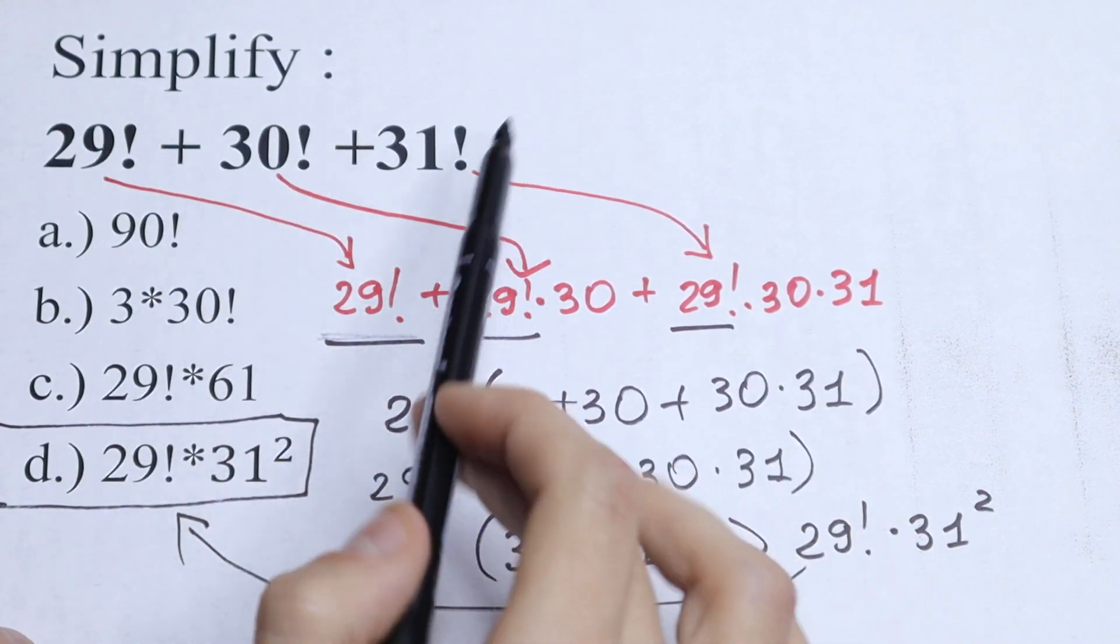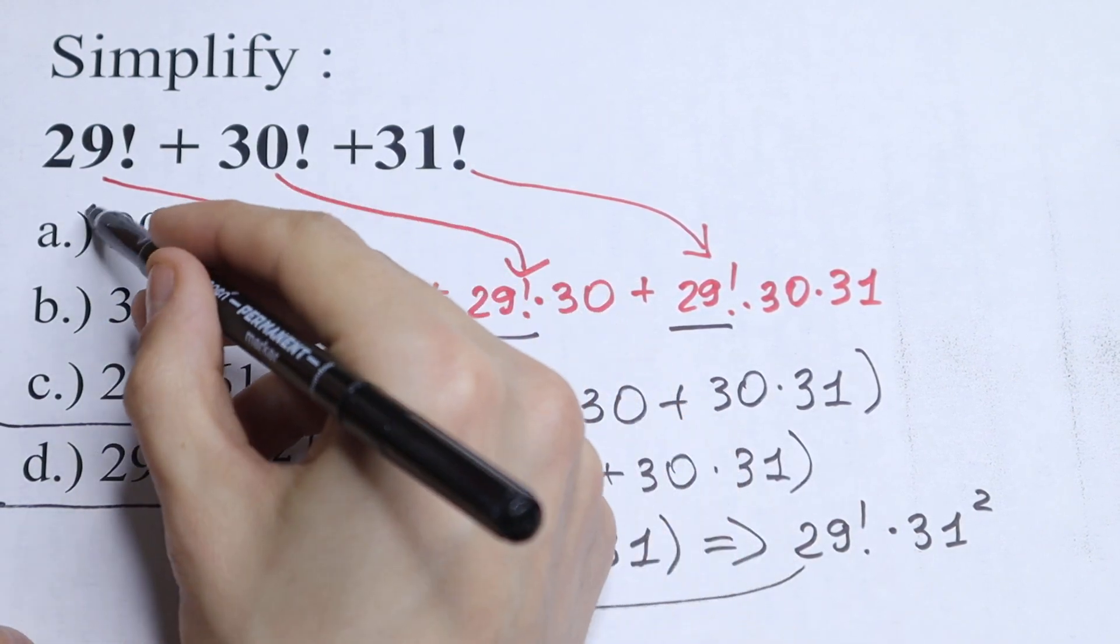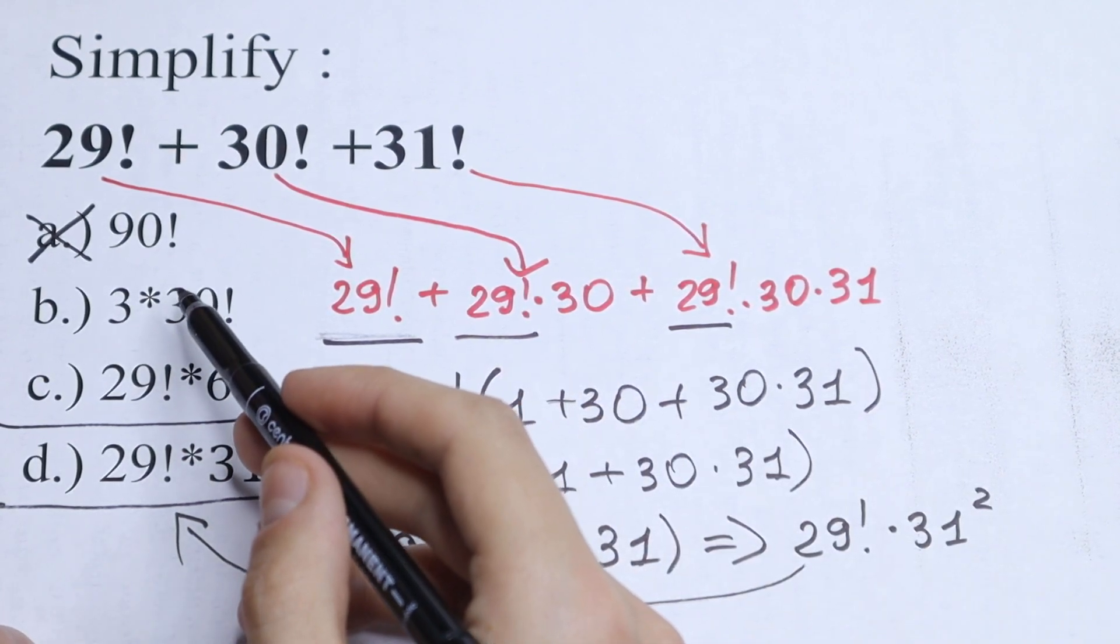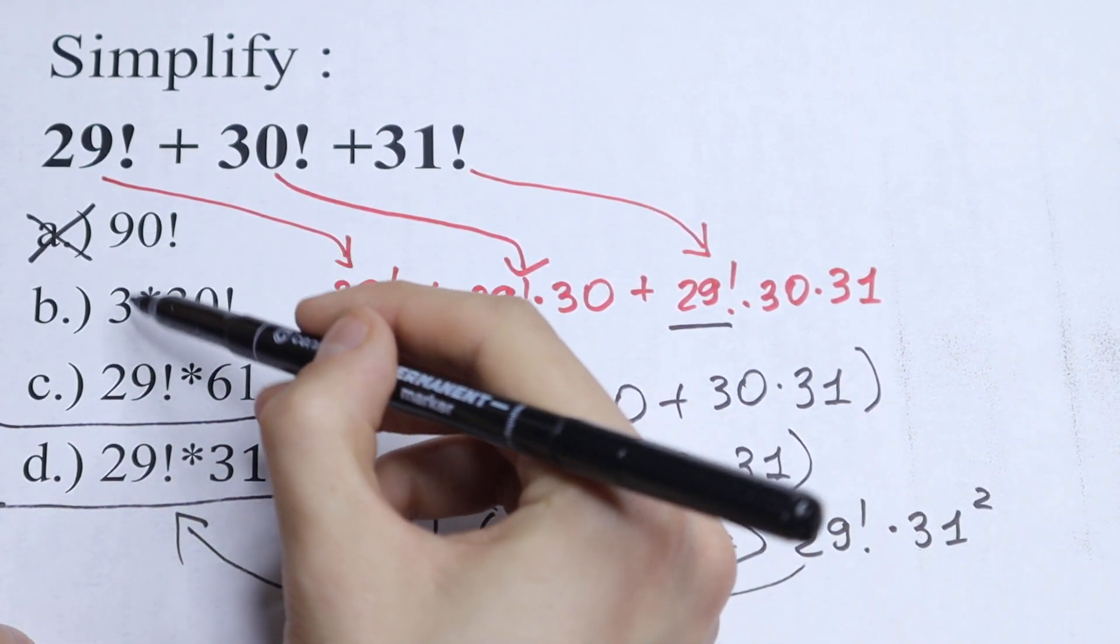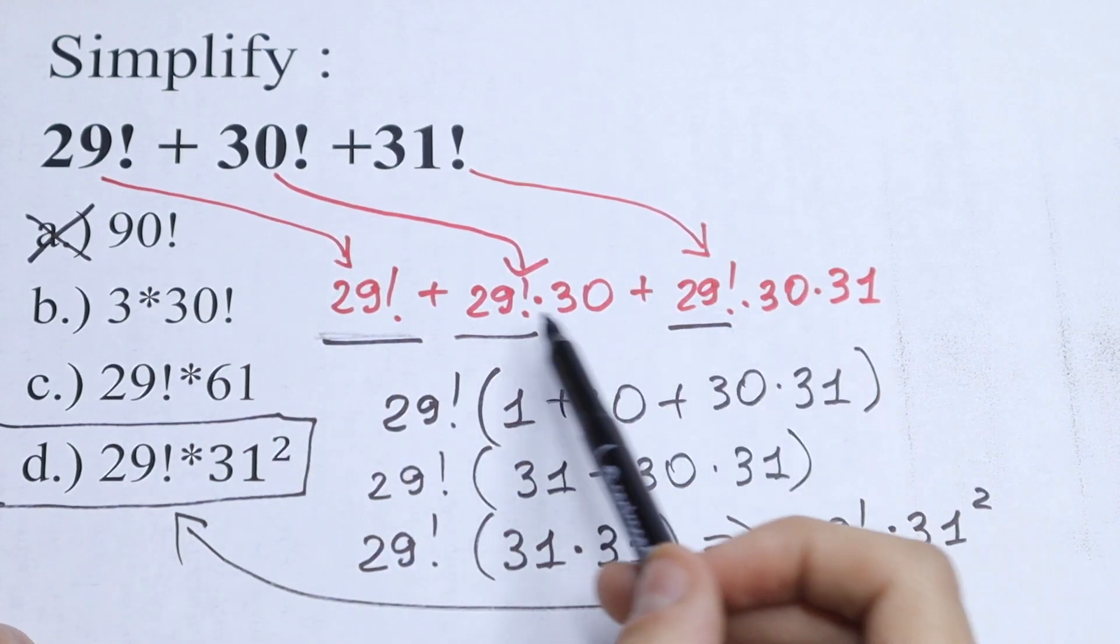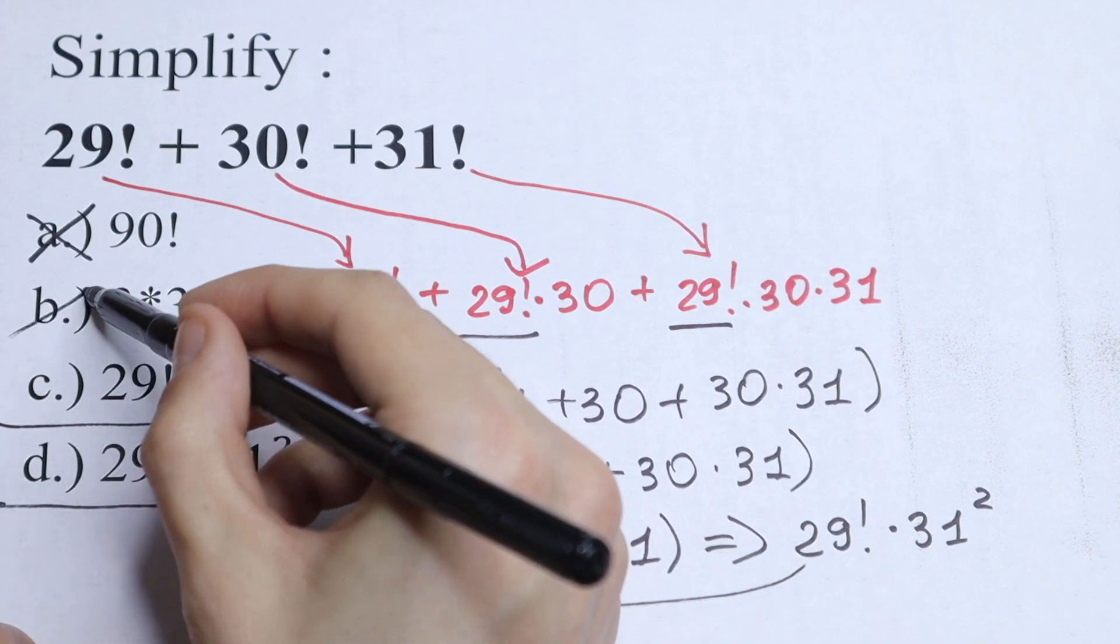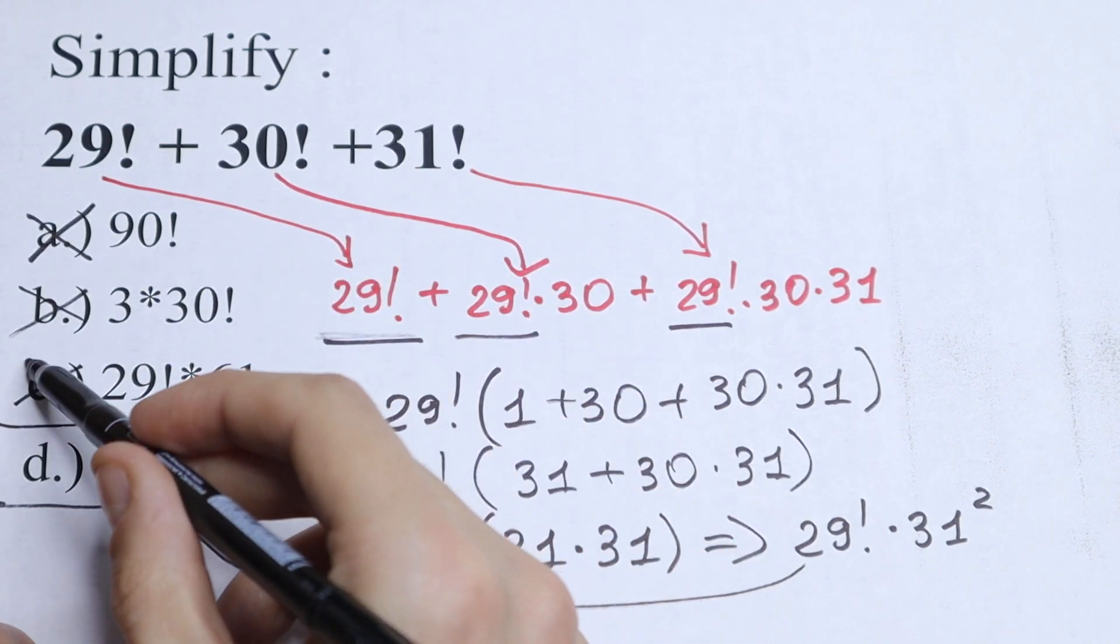So we cannot add all of these factorials, so option A is wrong for us. Of course this will be wrong, because this is like the most obvious solution right here. But we need to use a little bit of a trick, a little bit of a logic trick right here. So this is the wrong option.